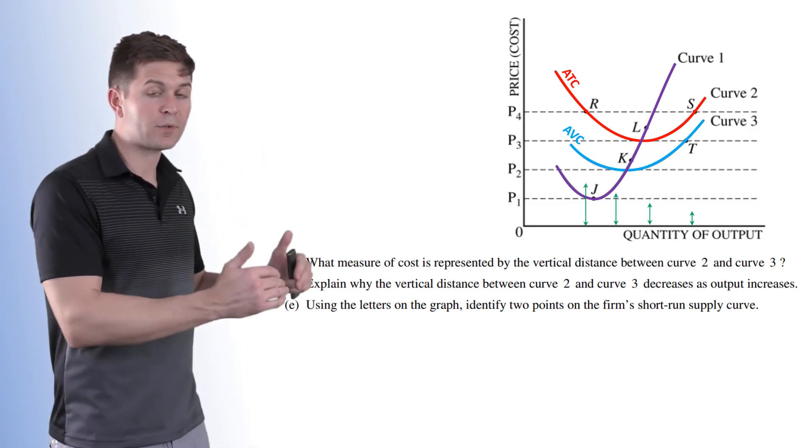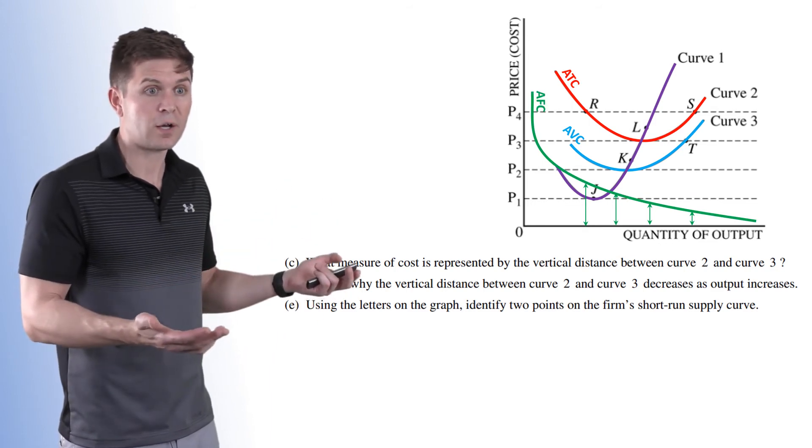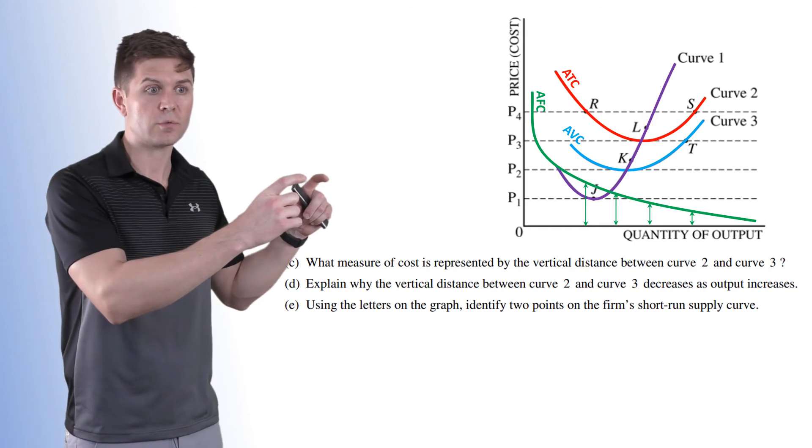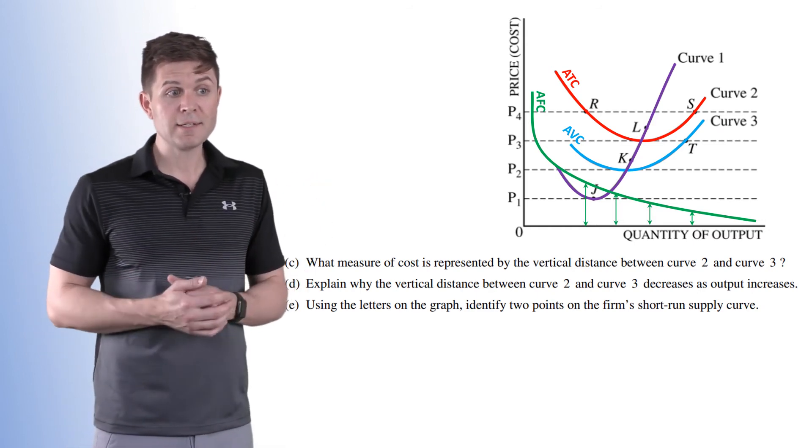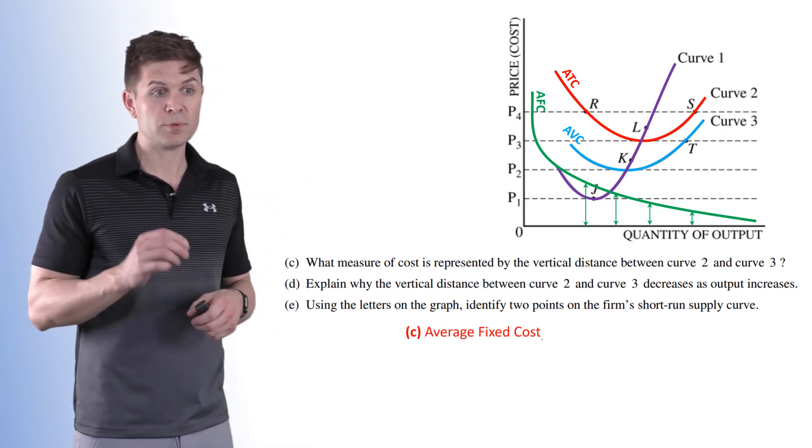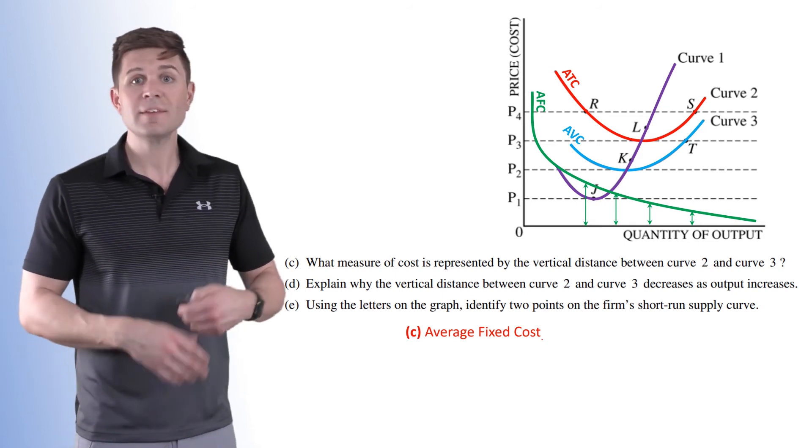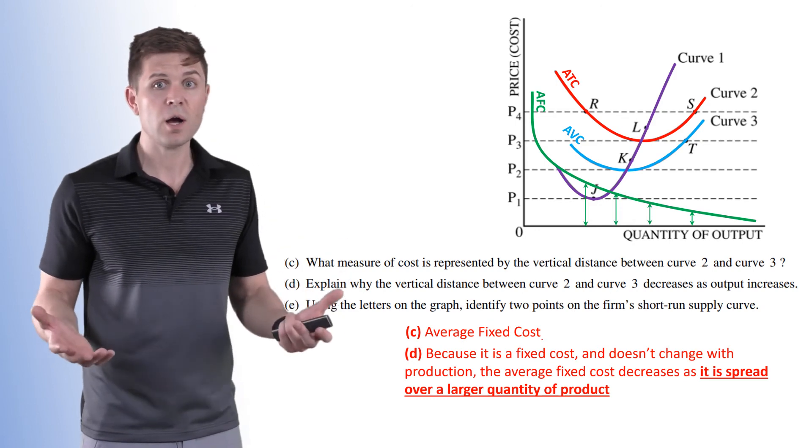If we drop the arrows down, it becomes a little more clear. This is our average fixed cost. Those distances represent the distance between those two curves. Now it goes on in D to explain why the vertical distance between curve two and curve three decreases as output increases. And this has to do with the fact that it's a fixed cost.